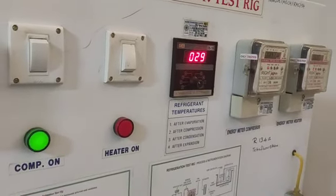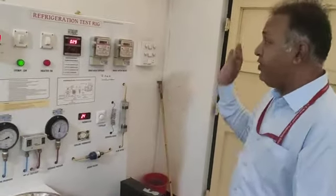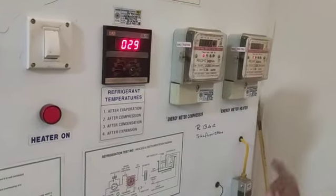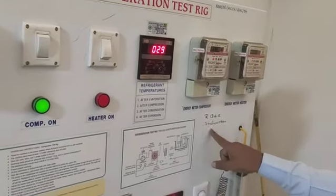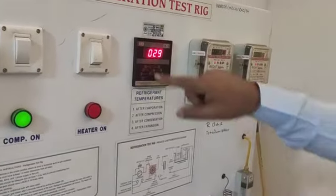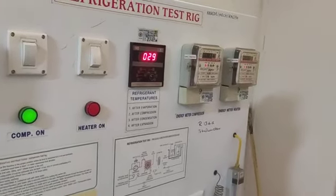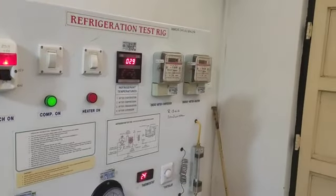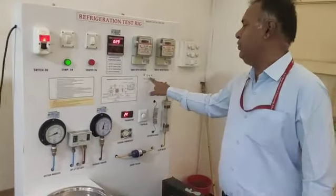If we know the actual temperatures and pressures, we can plot the actual cycle on a pressure-enthalpy diagram. The refrigerant used here is R134A, which is tetrafluoroethane. We need to use the pressure-enthalpy diagram of tetrafluoroethane — do not use it for R12 or R11. Since the refrigerant circulated in the setup is R134A, we must refer to the refrigeration tables of R134A for calculations.